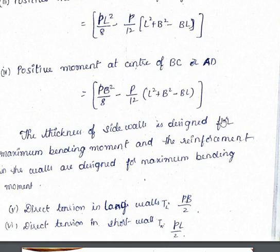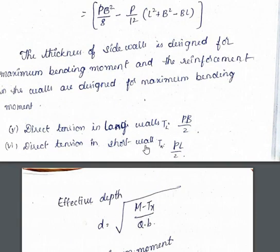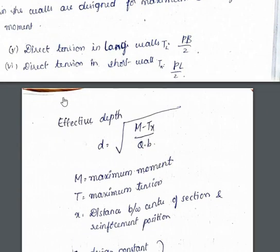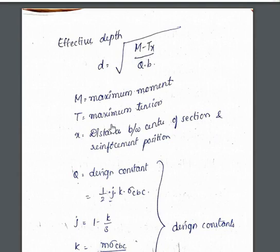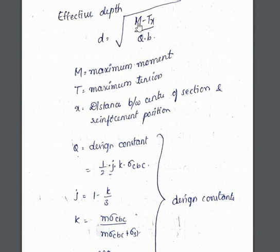The thickness of the side walls is designed for maximum bending moment, and the reinforcement in the side walls is also designed for maximum bending moment. Direct tension in the long walls is given by T = PB/2, and in the short walls by T = PL/2. We take the maximum of the two because in practice we provide the same reinforcement for both long and short walls.